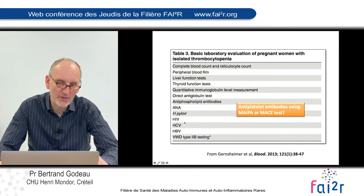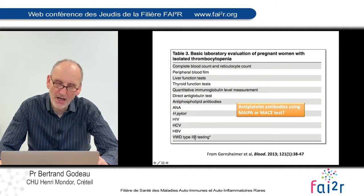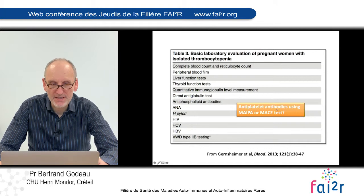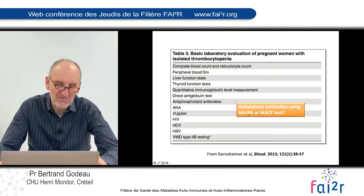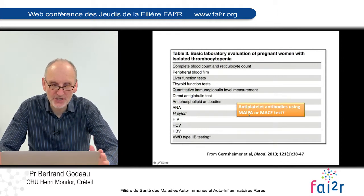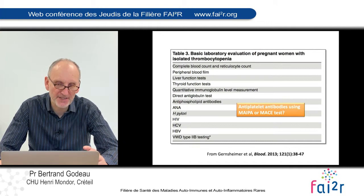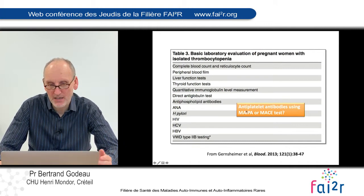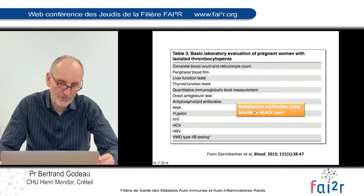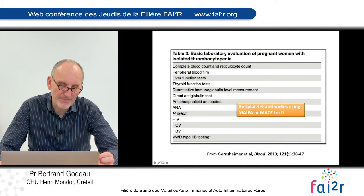For serology, it's usual to check the presence of HIV, HCV, and HBV. For von Willebrand disease type 2B, it's absolutely exceptional and it's not my practice to check for this diagnosis. There is no clear recommendation for antiplatelet antibody testing, and particularly the MAIPA test. It can sometimes be useful if you have hesitation between gestational thrombocytopenia and ITP, because in gestational thrombocytopenia antiplatelet antibodies are not present. In ITP you have a chance to find antiplatelet antibodies, but the sensitivity of this test is very low — in 50% of cases there is a negative MAIPA test in a real ITP.